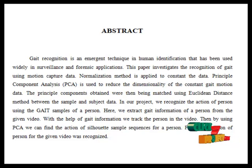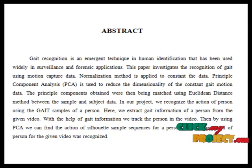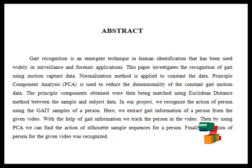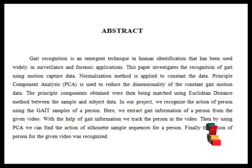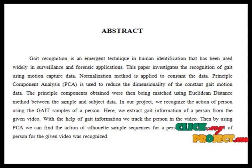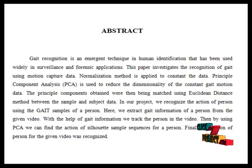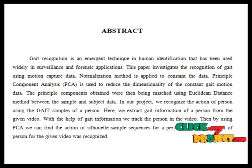Gait analysis is the systematic study of animal locomotion, more specifically the study of human motion using the naked eye and the brain of observers, augmented by instrumentation measuring body movements, body mechanisms, and the activity of the muscles. A typical gait analysis laboratory has several cameras placed around a walkway or a treadmill which are linked to a computer.